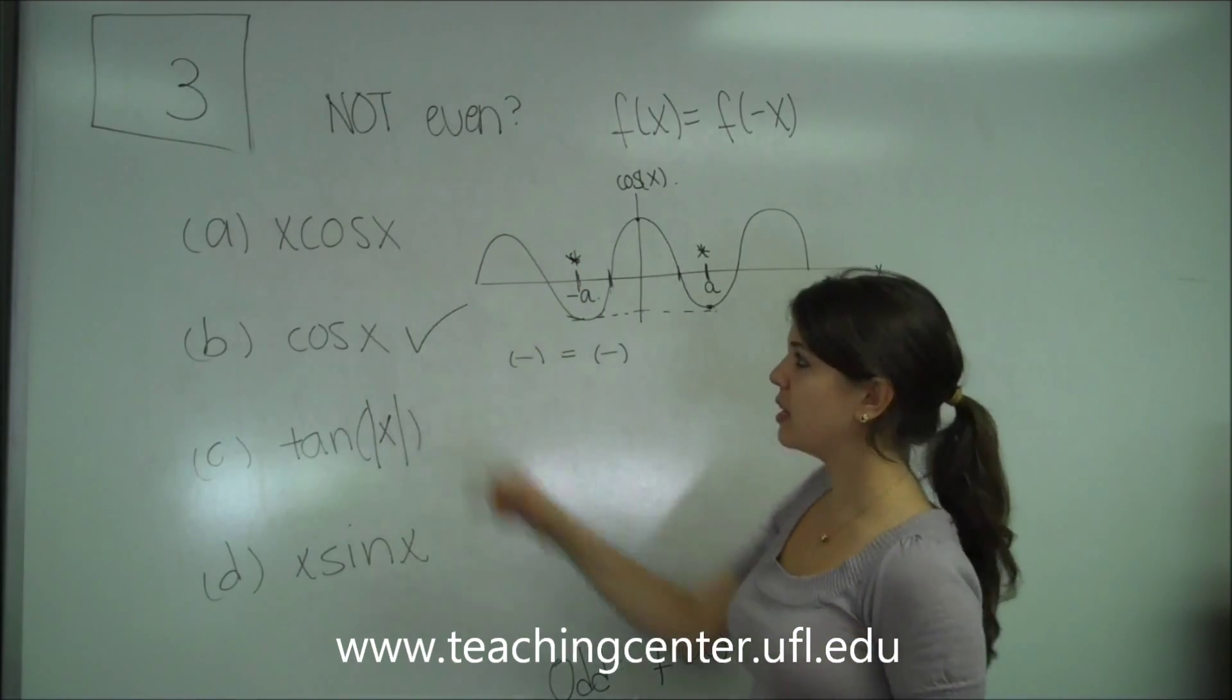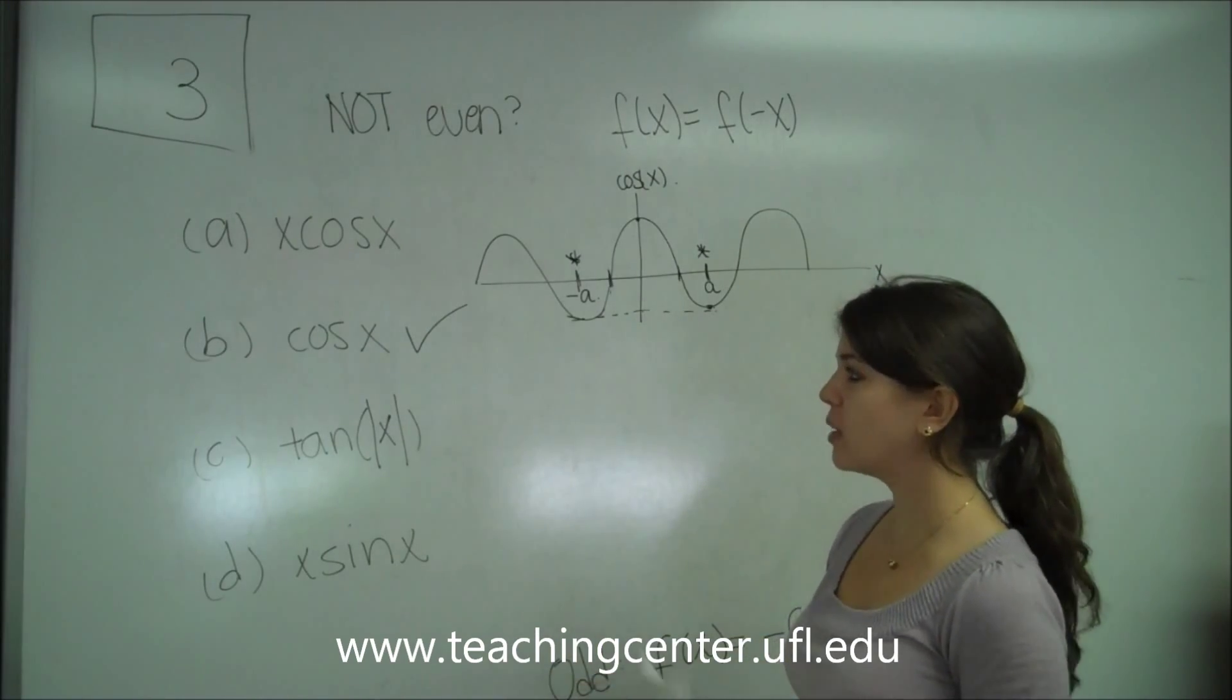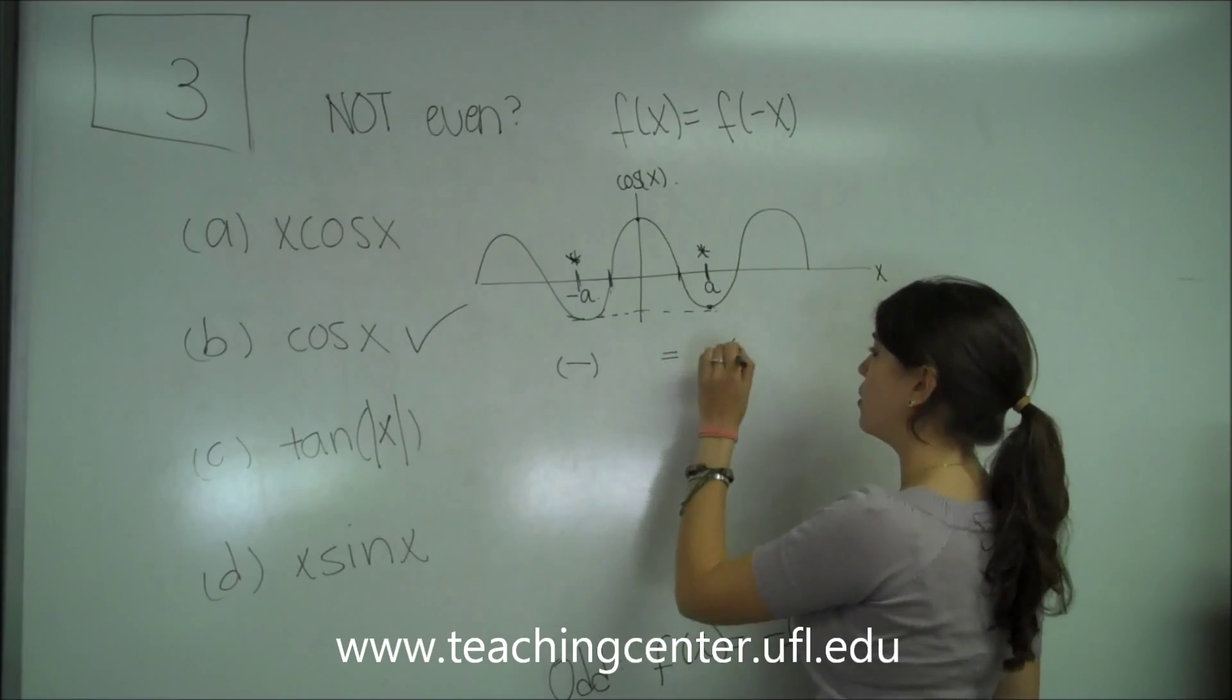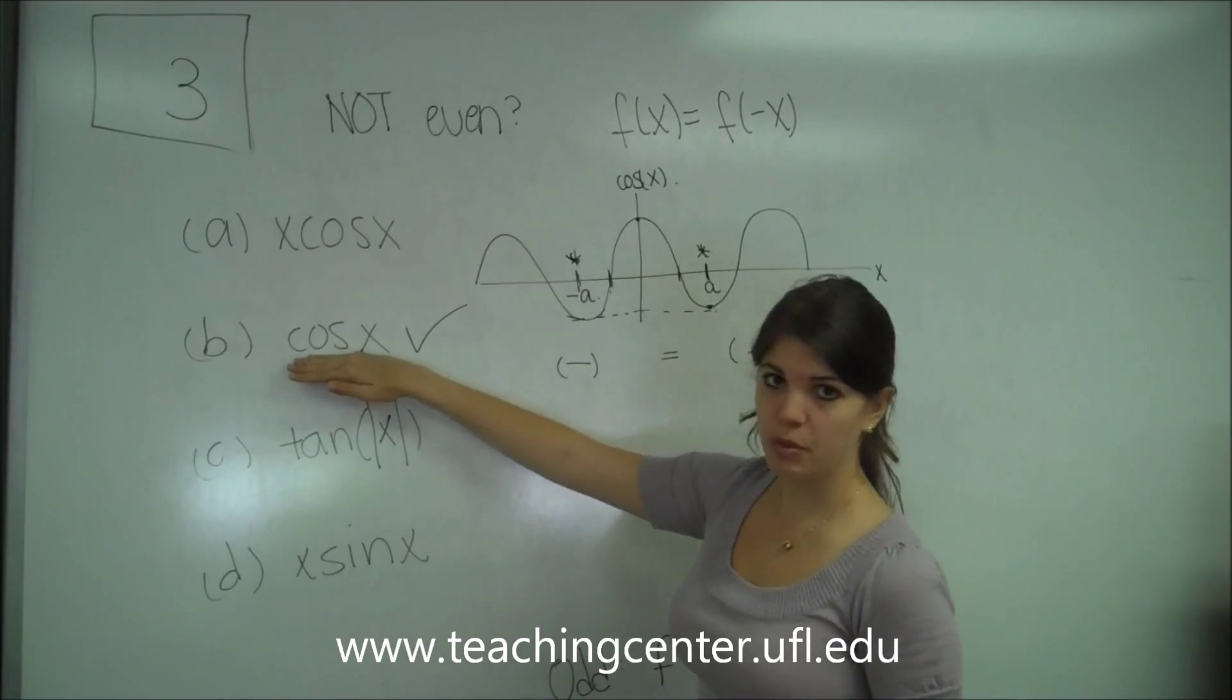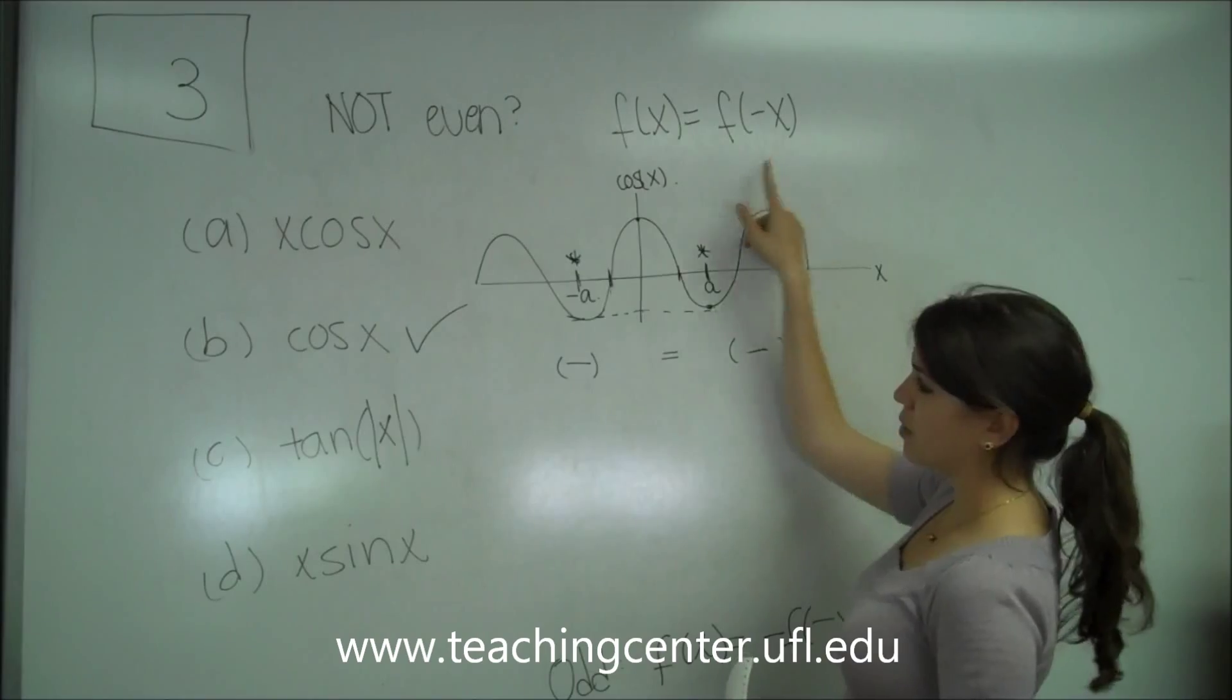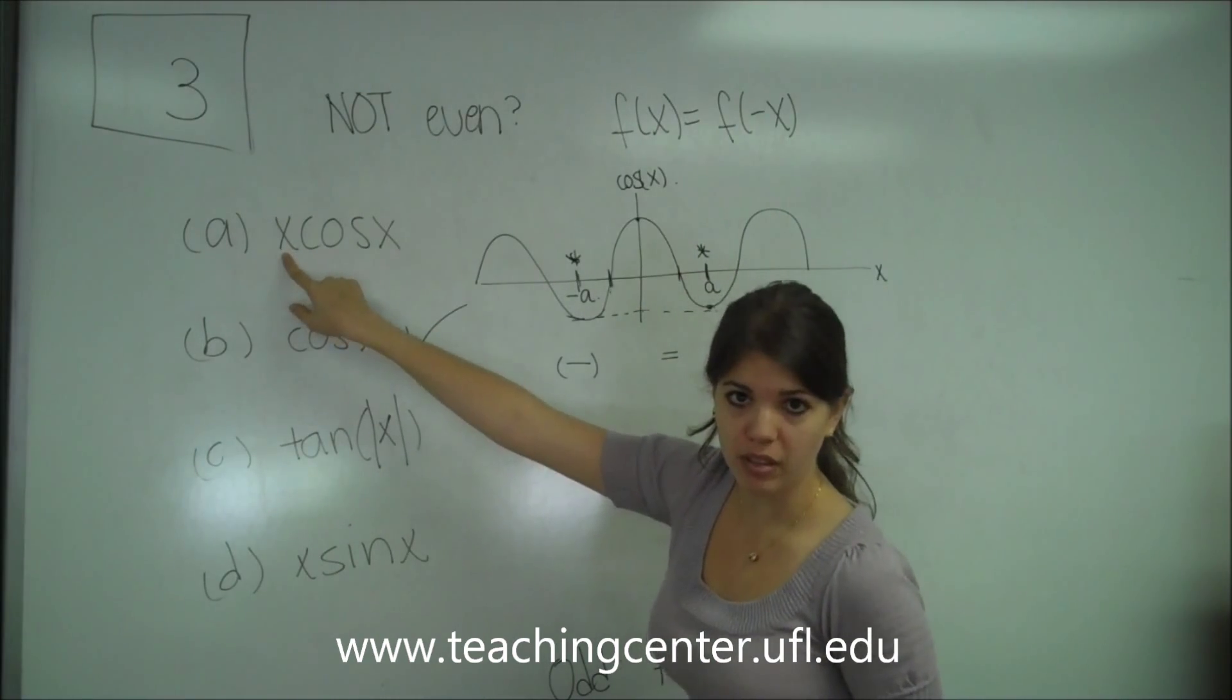Let's go ahead and do A now since we've already done just cosine. What happens if we multiply an x? Well, let me leave that up. We already said what the cosine would be when we plug in a positive x and then a negative x.